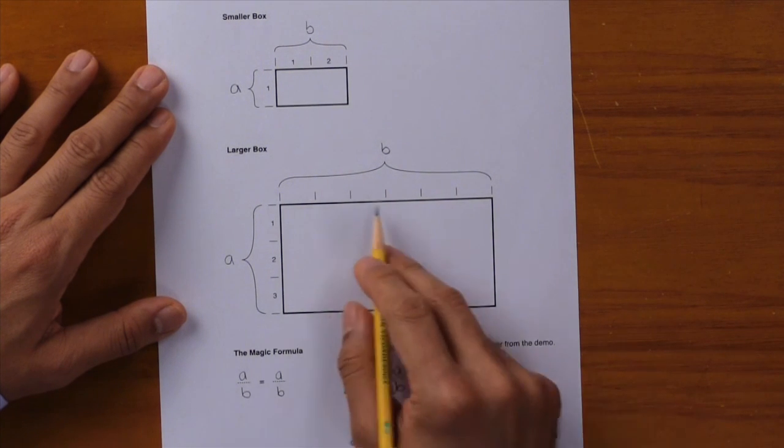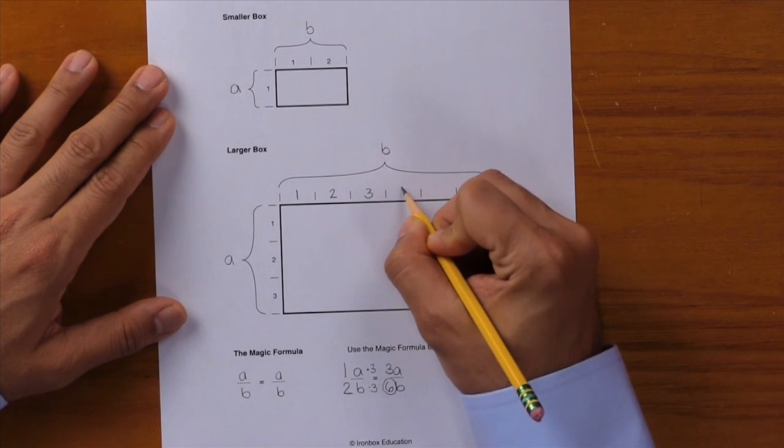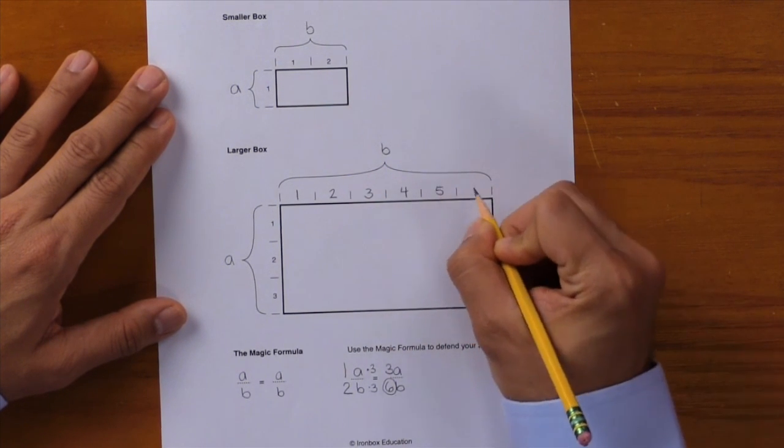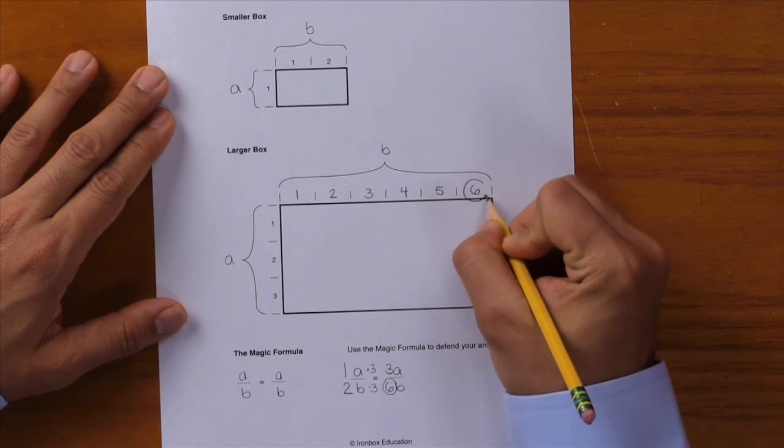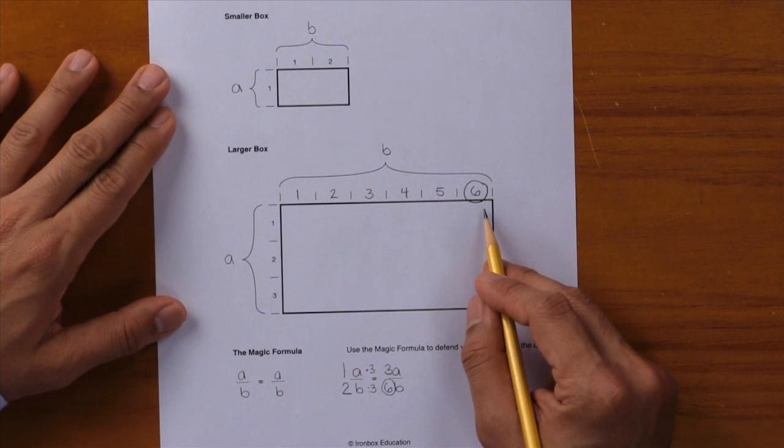Let's see if this is true. Here inside b we have one, two, three, four, five, six units, and we know that our answer is correct. That's how easy it is to solve proportions. Use the magic formula to set up the problem correctly, then it just becomes a matter of solving an equivalent fraction.